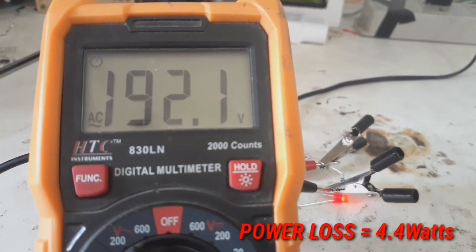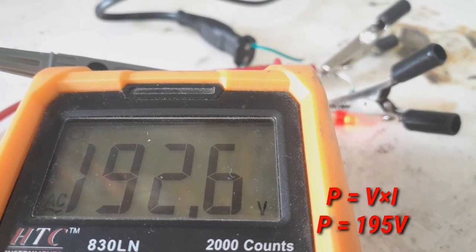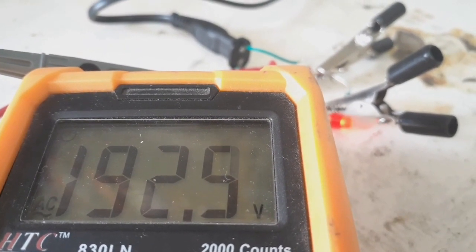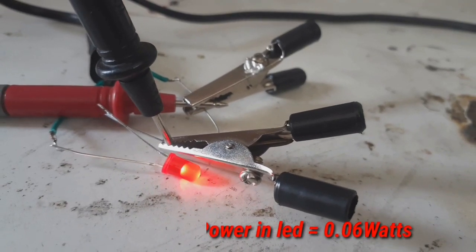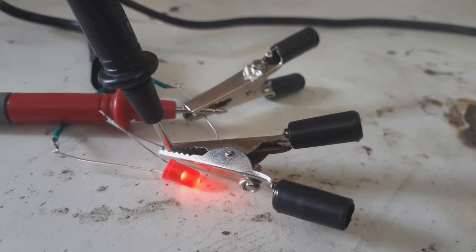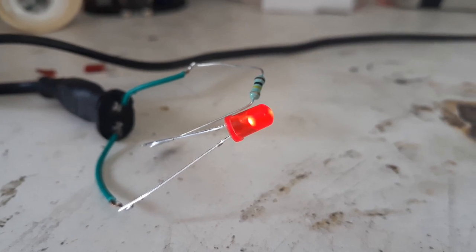By calculating, it's around 4.4W as the applied voltage is 220V multiplied by 20mA of current flowing through the LED. By comparing it with the power consumed by the LED which is around 0.06W, so this series resistor circuitry is quite inefficient.